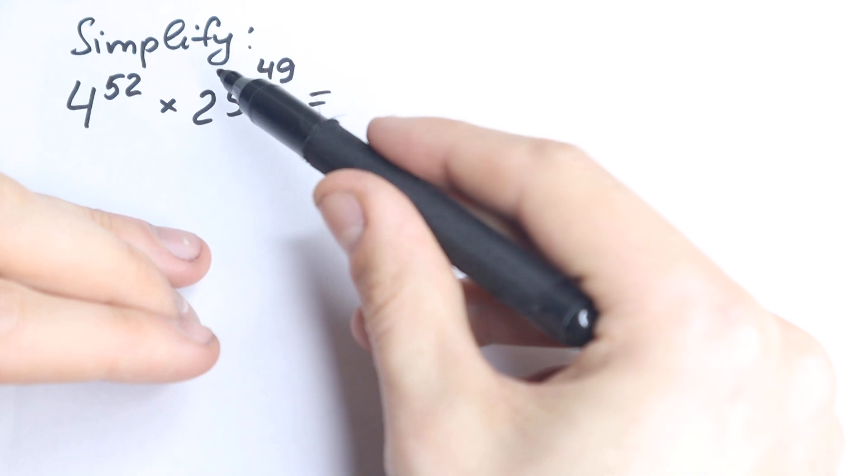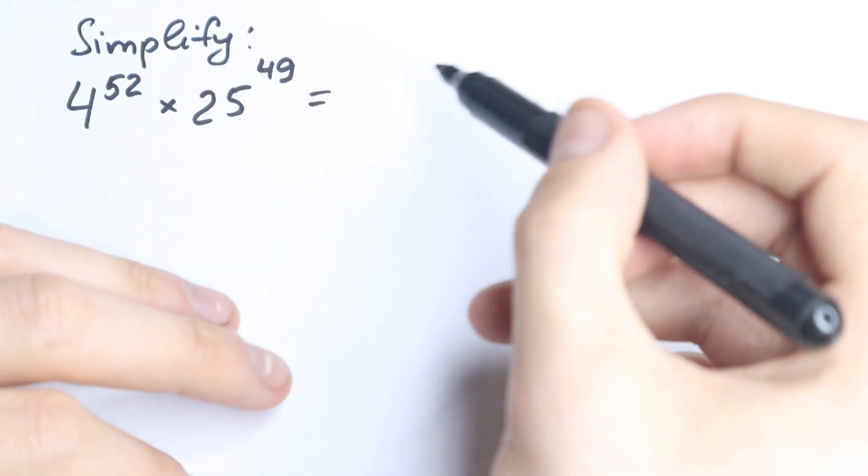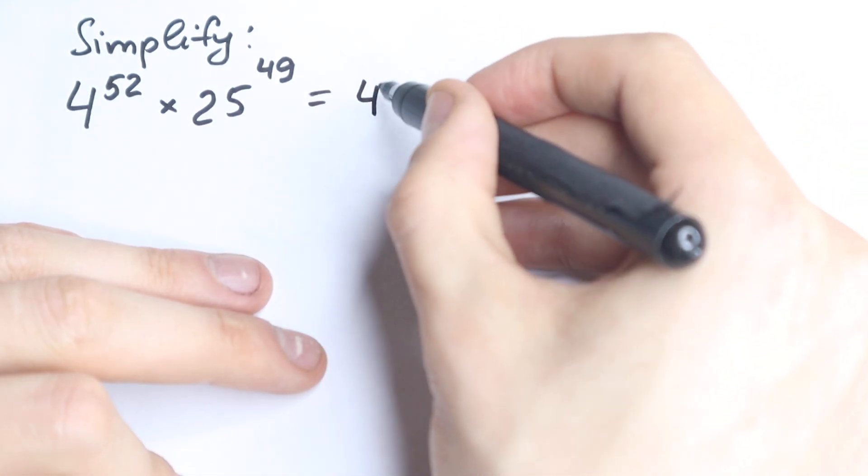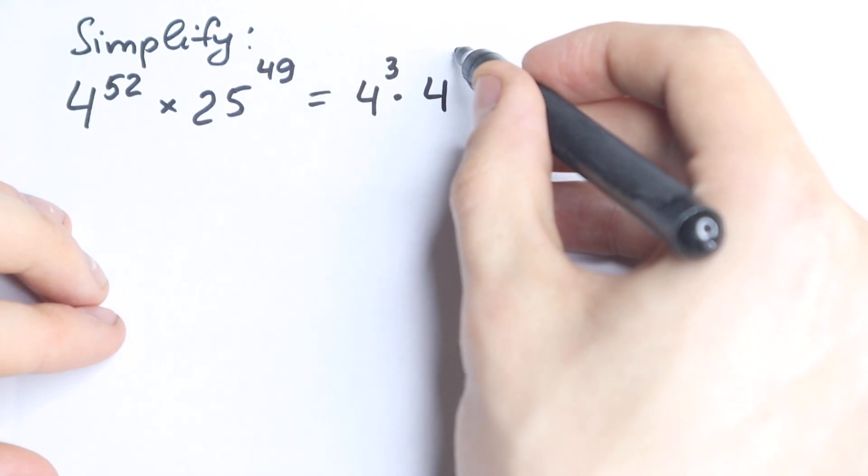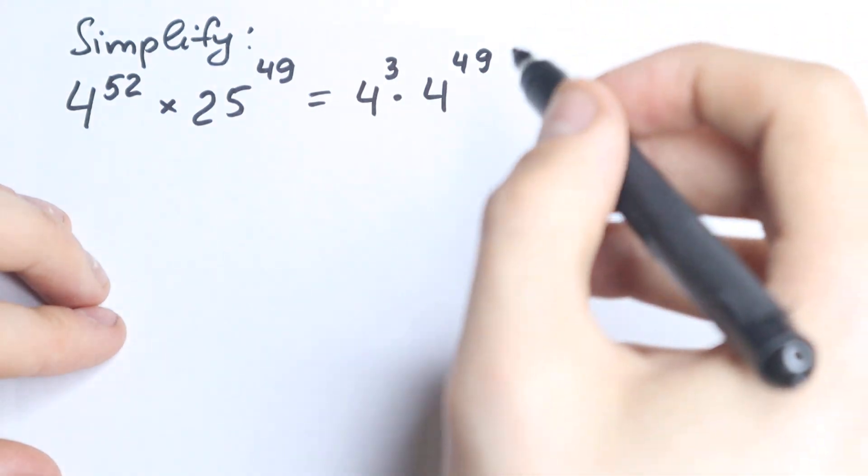Because if we write this as 4 cubed, so let's write 4 to the power 52 as 4 cubed times 4 to the power 49. This is our first step.